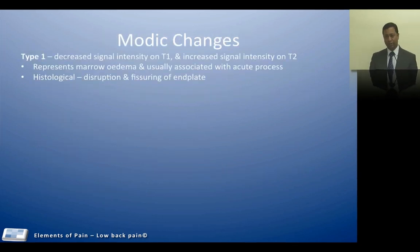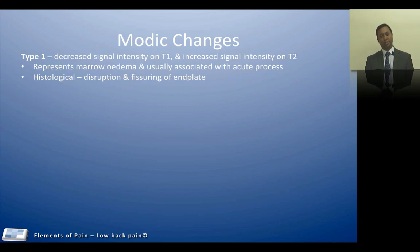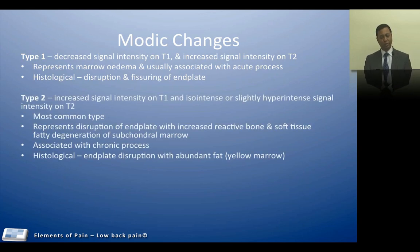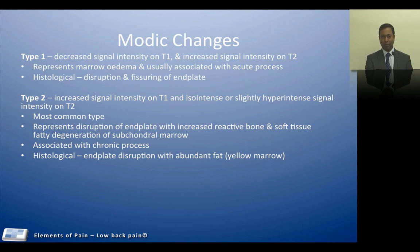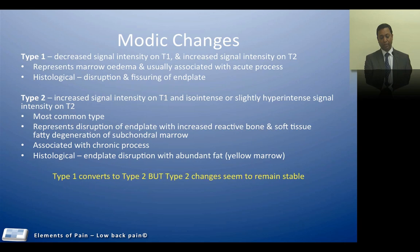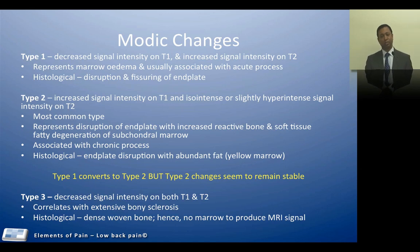We are going to talk about Modic changes based on MRI findings. Type 1 changes show decreased intensity on T1 and increased intensity on T2 — the main changes are secondary to marrow oedema, and histologically there is disruption and fissuring of the end plate. Type 2 changes show increased signal intensity on T1 and iso-intense or hypo-intense signal on T2, with end plate disruption and abundant fat deposition — yellow marrow. Bear in mind: type 1 converts to type 2, but type 2 is stable. Type 3 shows decreased signal intensity on both T1 and T2, and shows dense woven bone histologically with no marrow to produce MRI signal changes.